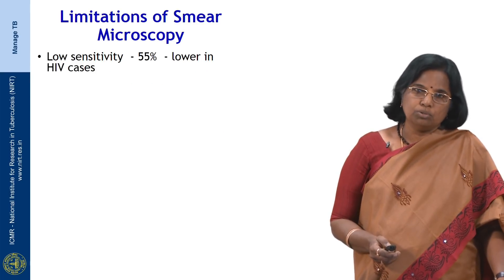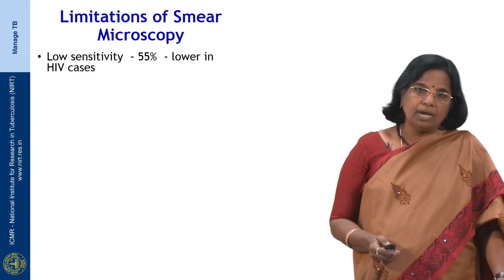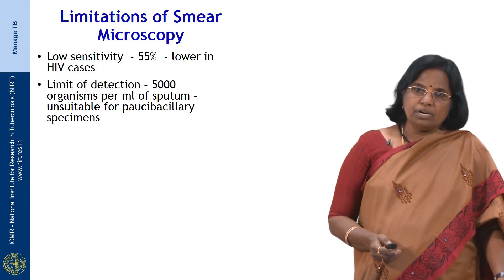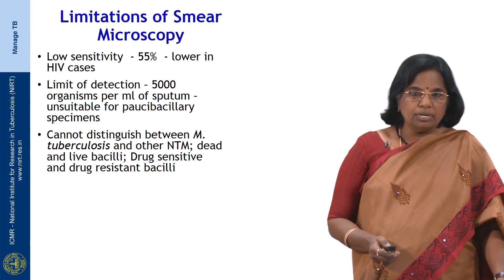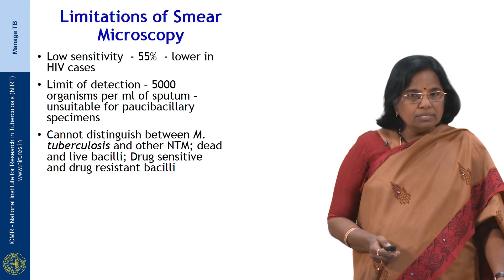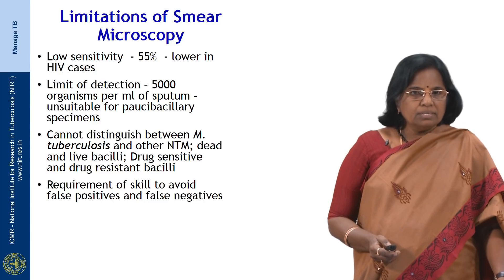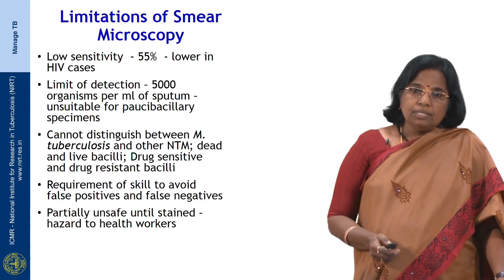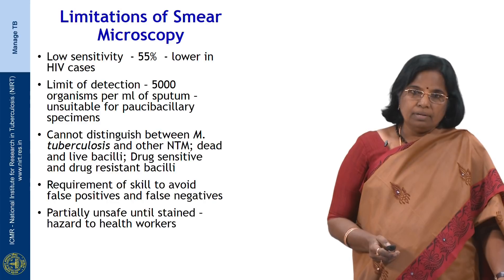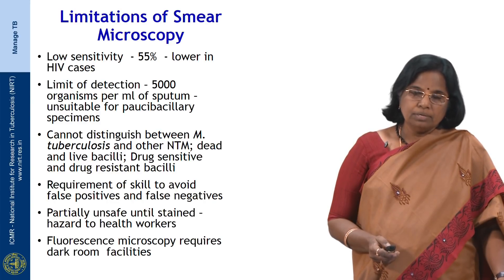Limitations of smear microscopy: it has low sensitivity of about 55 percent, which could be lower in HIV and pediatric cases. The limit of detection ranges between 5,000 to 10,000 organisms per ml of sputum, hence may be unsuitable for paucibacillary specimens. Smear cannot distinguish between M. tuberculosis and non-tuberculosis mycobacteria, nor between dead and live bacilli, nor between drug sensitive and drug resistant bacilli. Significant skill is required to avoid false positive and false negative results. The smear is partially unsafe until stained and fluorescence microscopy requires dark room facilities.